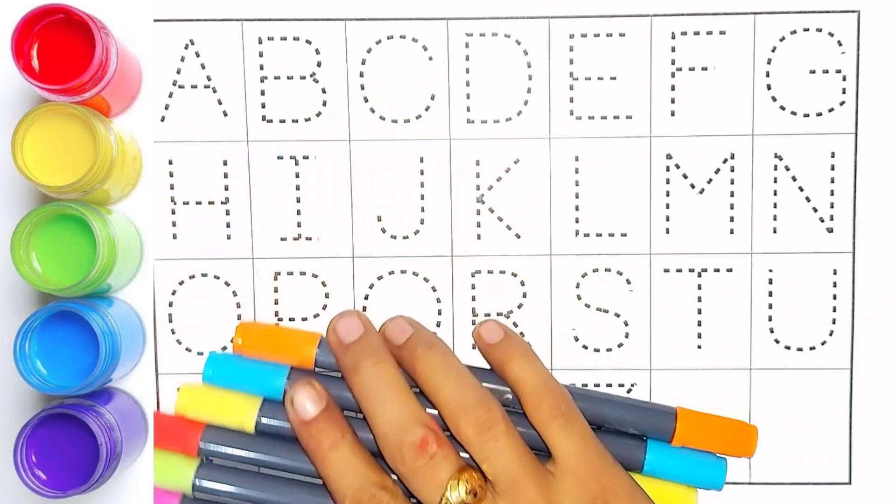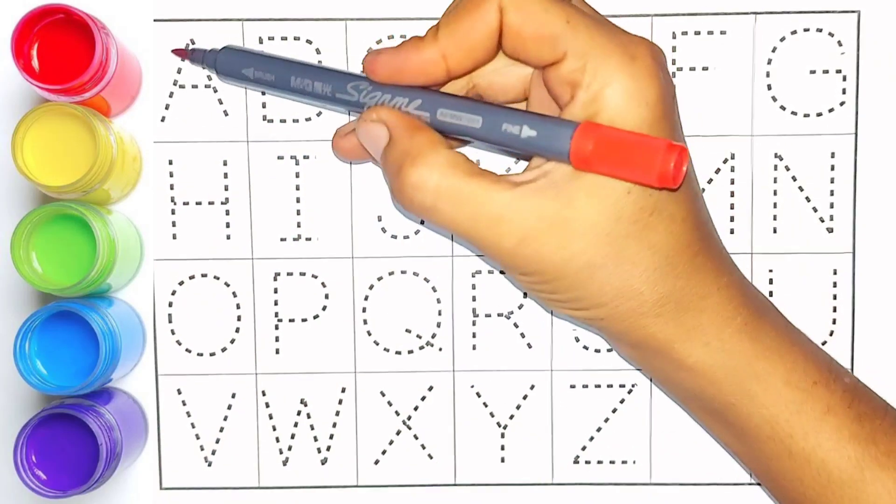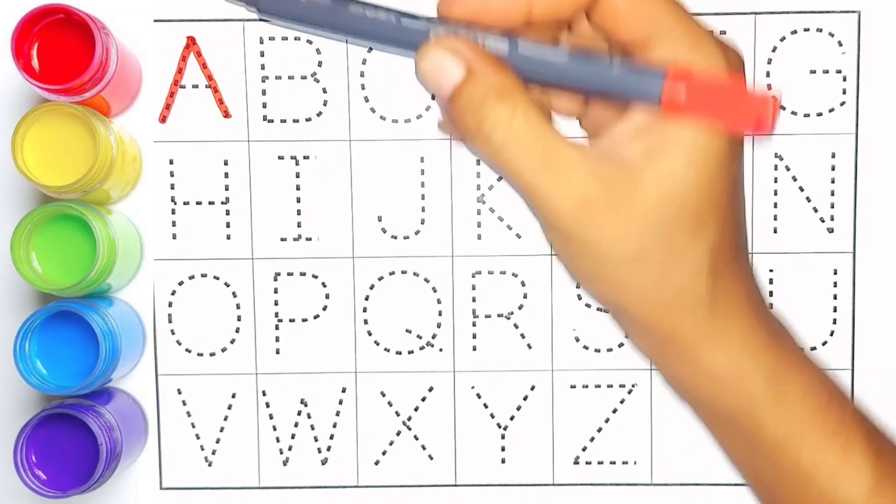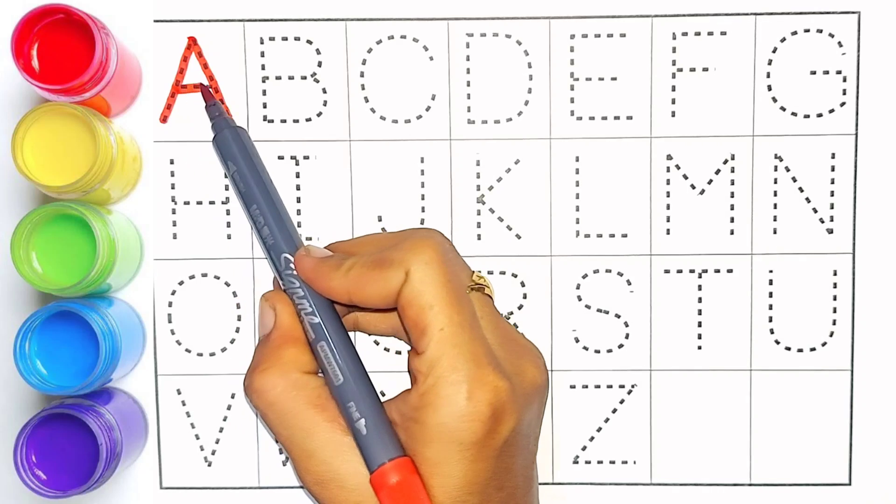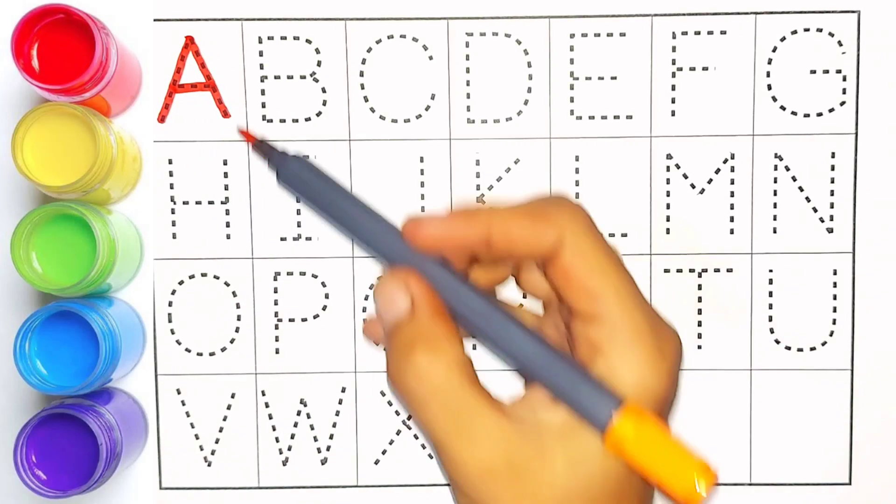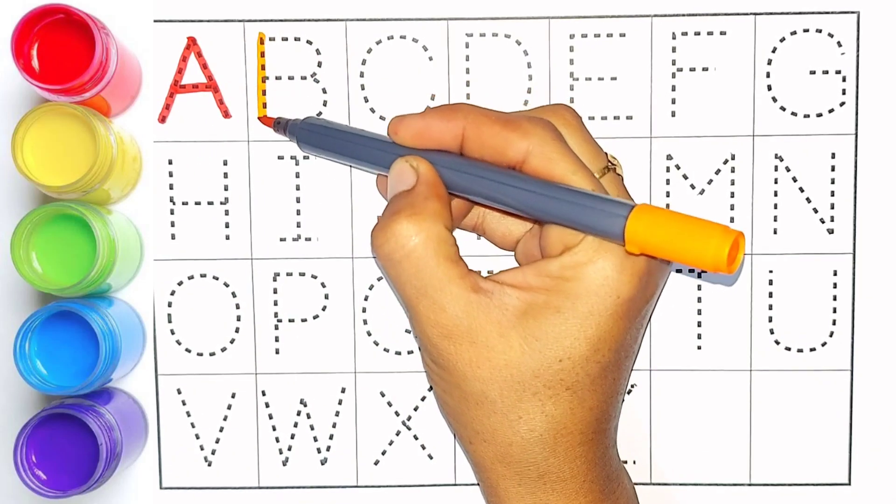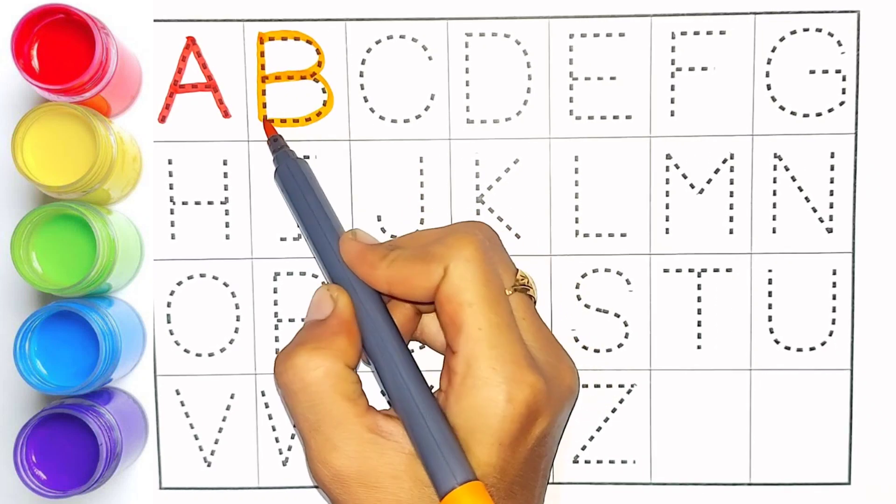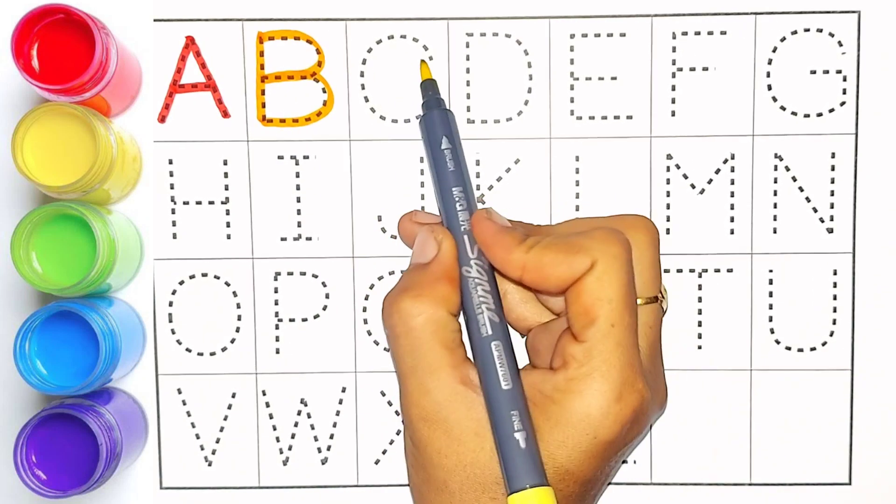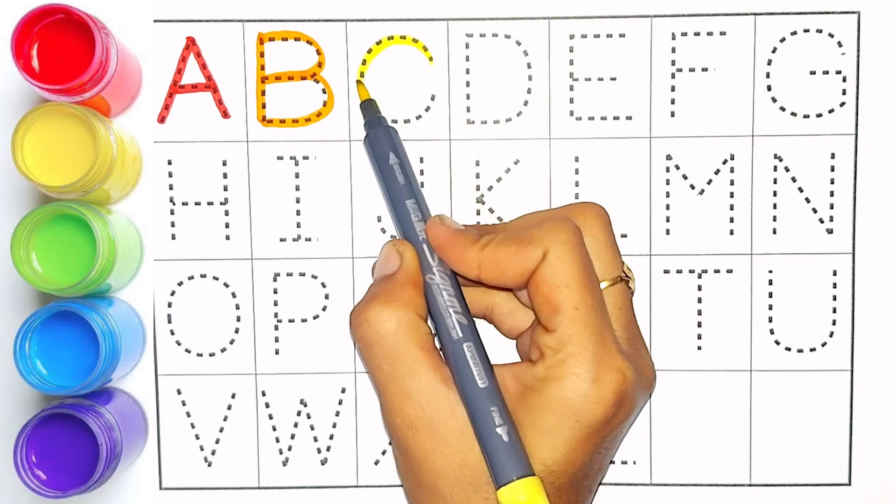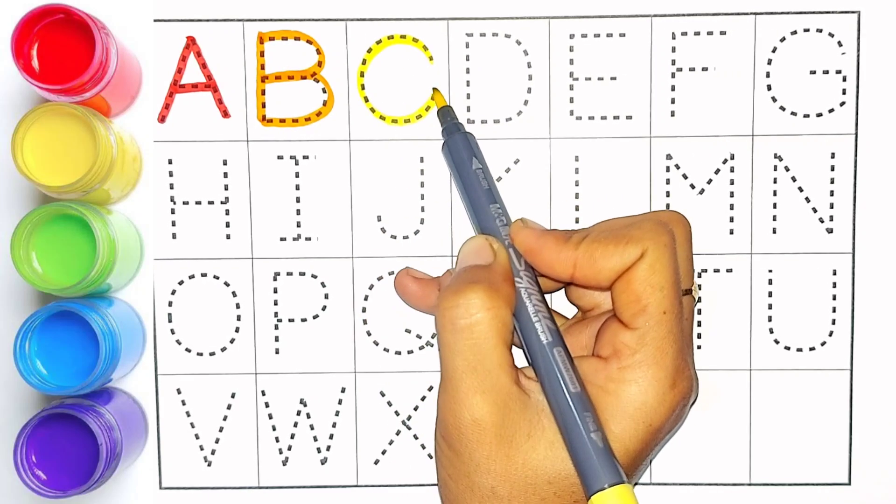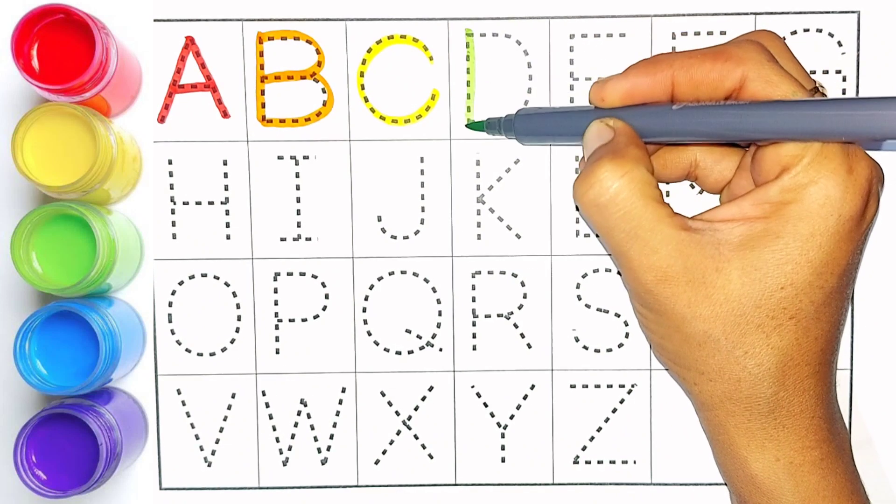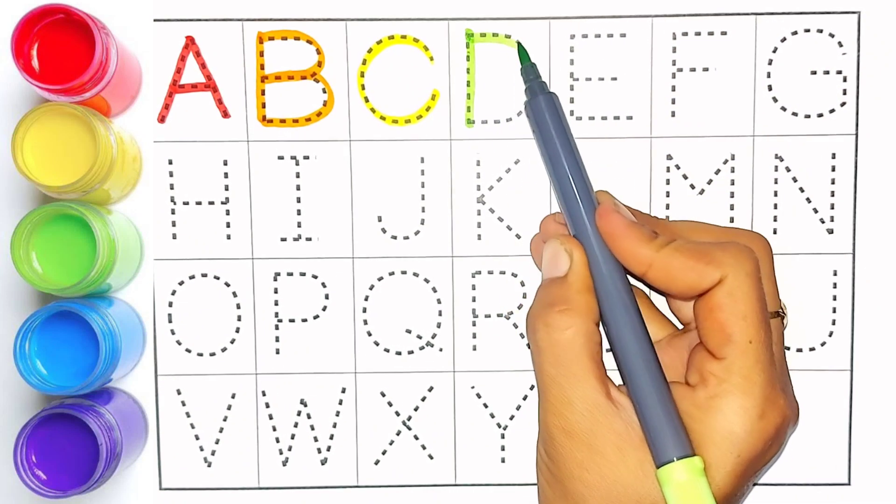Let's write alphabets. Red color, A. A is for apple. Orange color, B. B is for bat. Yellow color, C. C is for cat. Light green color, D. D is for duck.